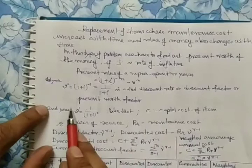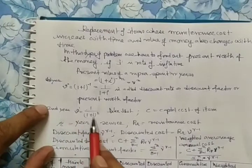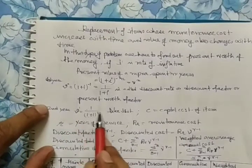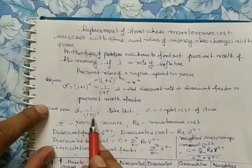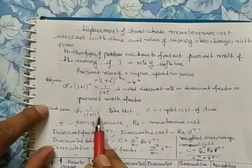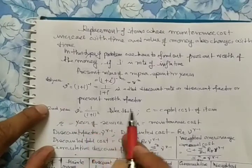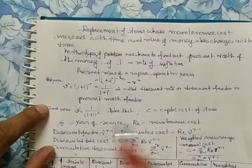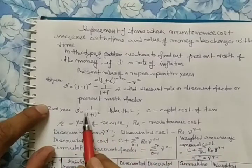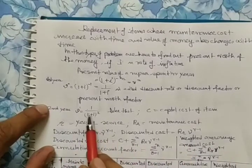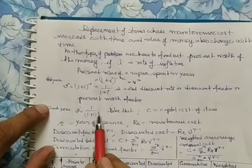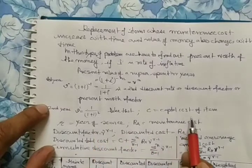For the second year, similarly, it is 1 divided by (1 + i) to the power 2. And for the third year, 1 divided by (1 + i) to the power 3. Like that, we have to proceed.